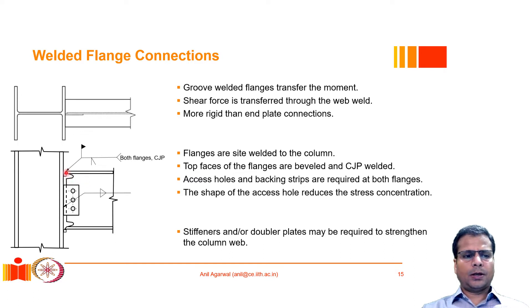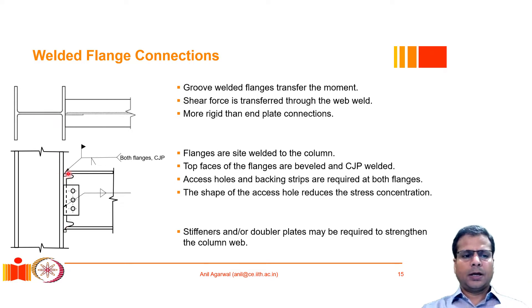Only the top faces of the flange should be bevelled, because that is where the welder can easily access and deposit the weld material. If it was bevelled from the bottom, it would be very difficult to weld upside down. Because it is a site weld, the column cannot be rotated, so it is better to bevel in the same direction. This is shown by the sign representing the bevel groove in the beam flange.